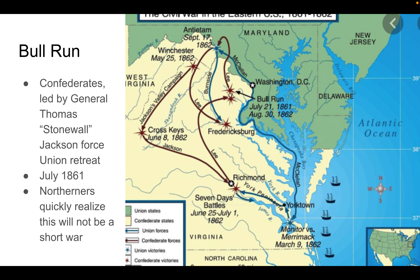The first battle, the Battle of Bull Run, was almost treated like a show — people from D.C. actually rode out to witness it as if it were a picnic outing. Unfortunately, the North underestimated its enemy. The Confederates won that battle, forcing General Thomas 'Stonewall' Jackson to retreat in July of 1861. This was the first indication that this would not be a short war, but might be much longer.